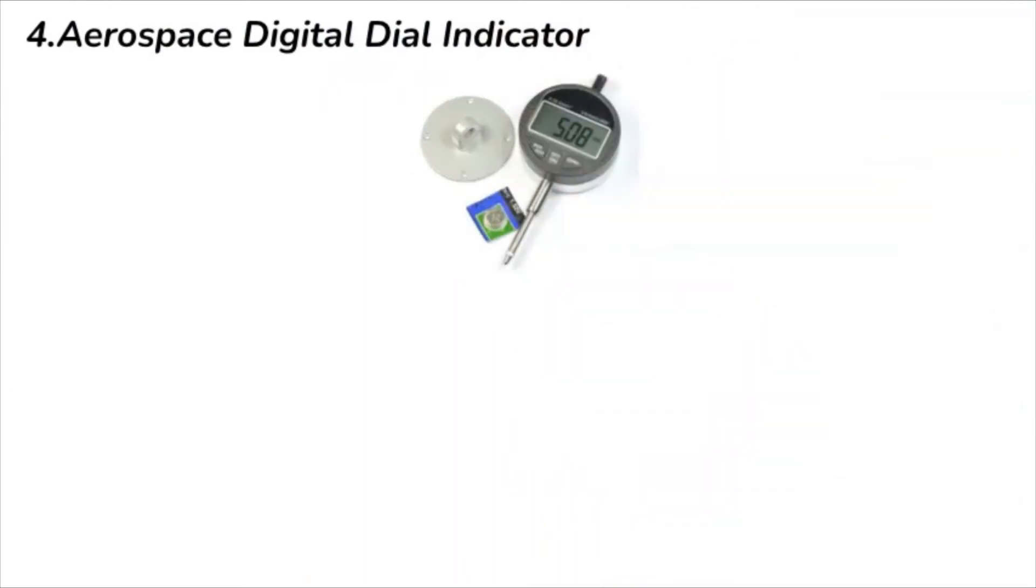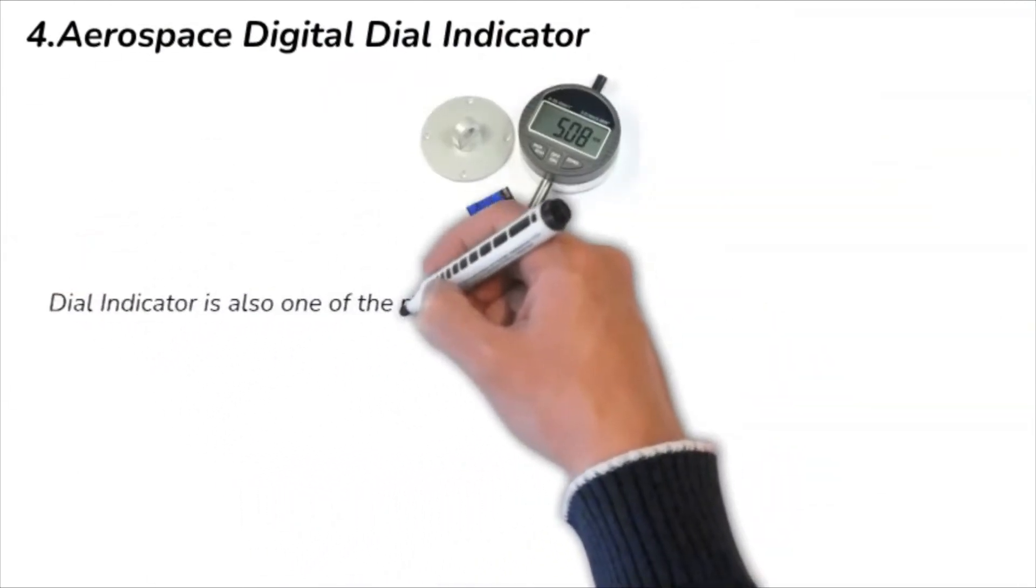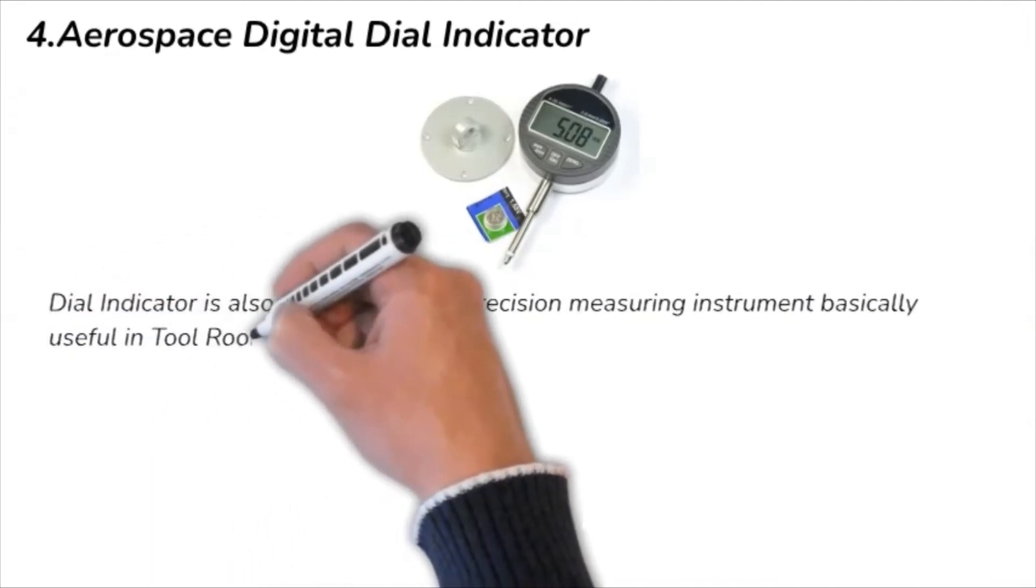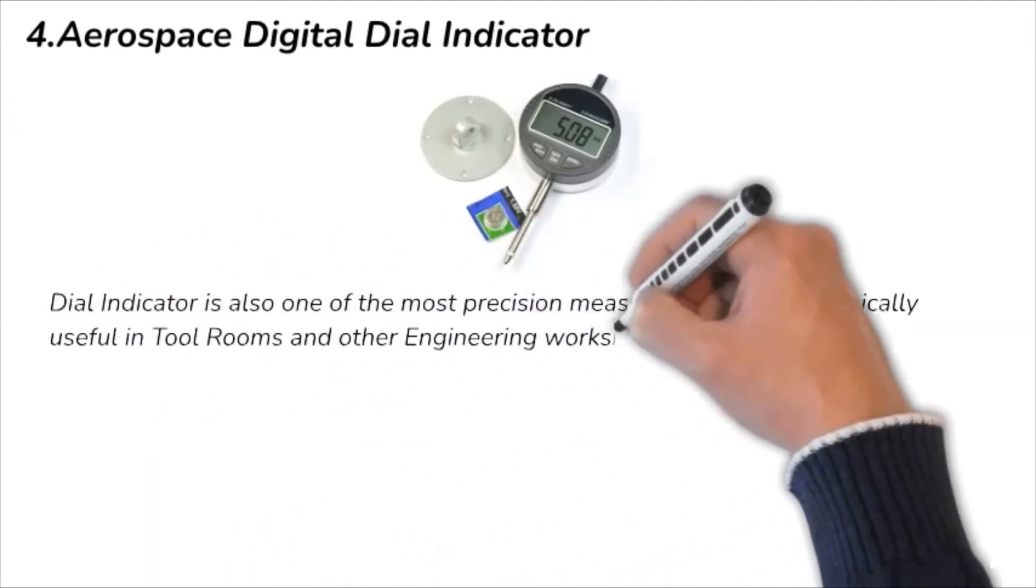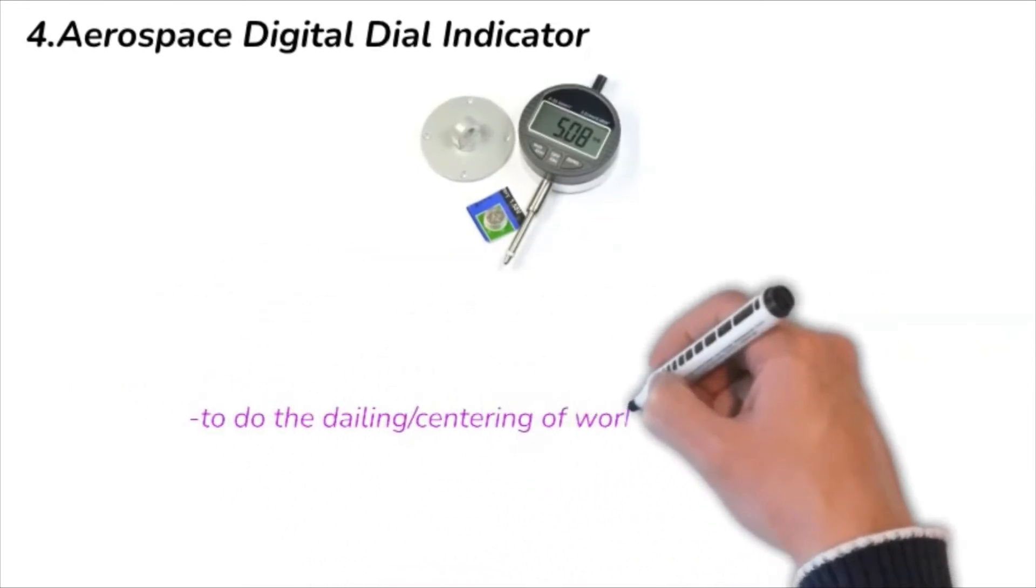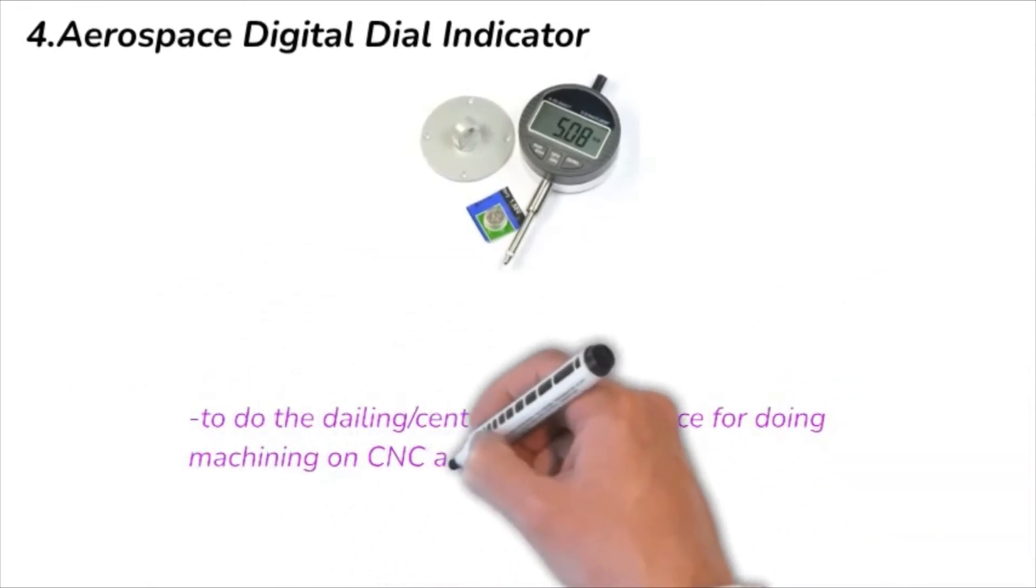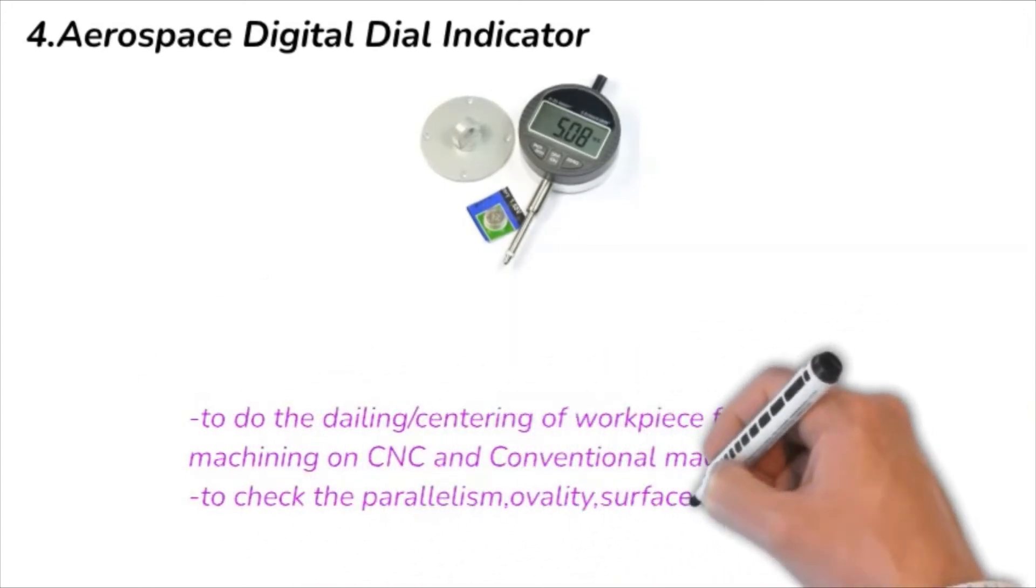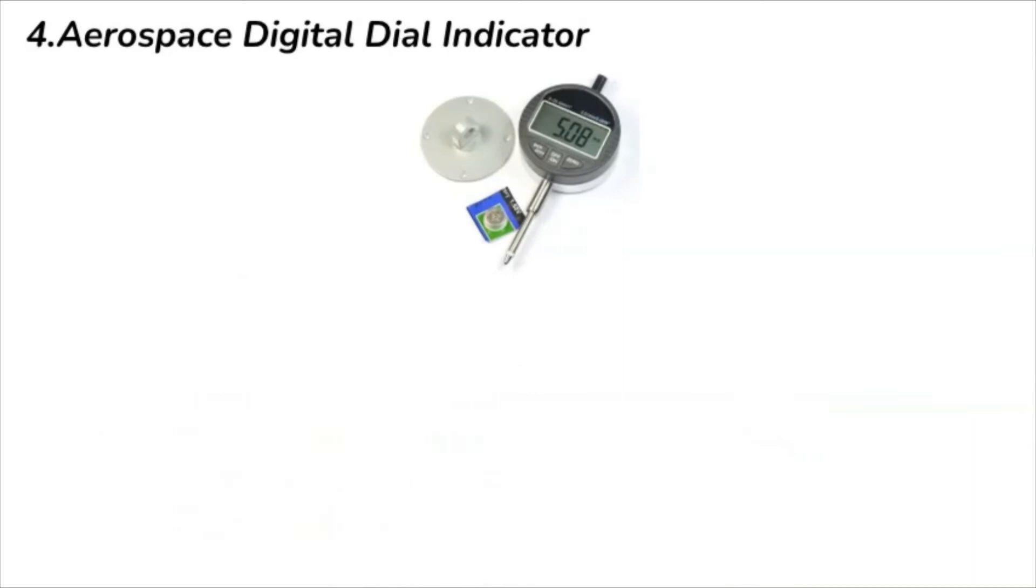Number four: Aerospace Digital Dial Indicator. Dial indicator is also one of the most precision measuring instruments, basically useful in tool rooms and other engineering workshops. There are multiple uses of this dial indicator: to do the dialing centering of workpiece for doing machining on CNC and conventional machines, to check the parallelism,ability, surface finish of workpiece or component.